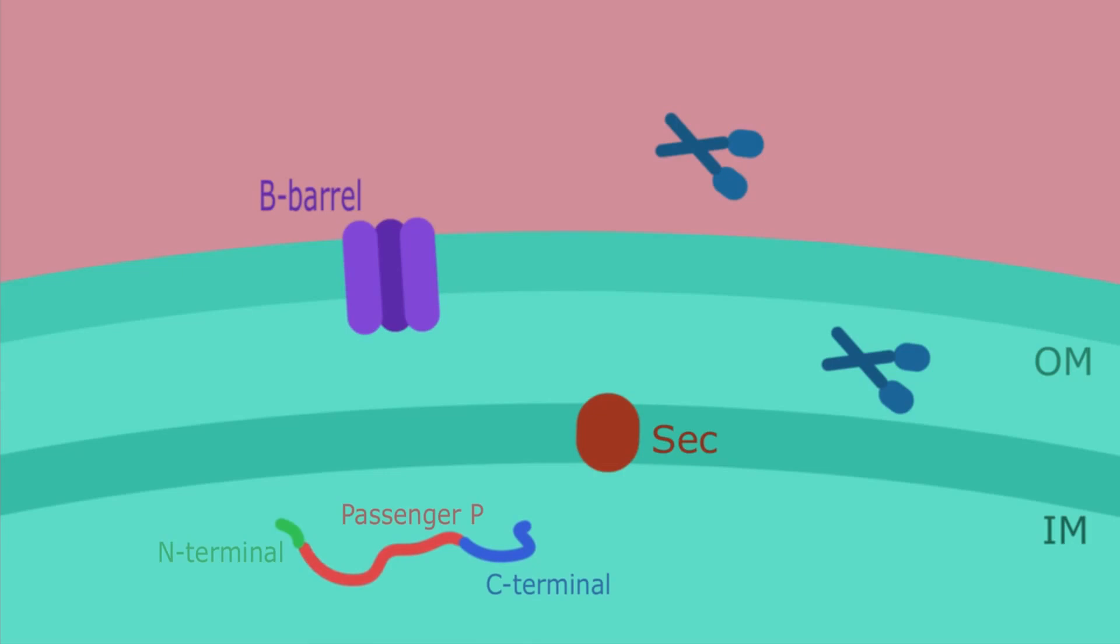Now let's take a look at how this works. First, let's take a look at the protein that will be secreted. It has an N-terminal, a passenger protein, and a C-terminal domain.